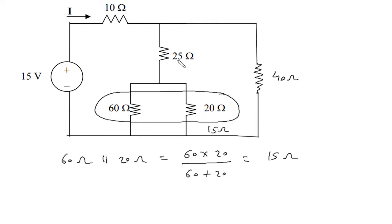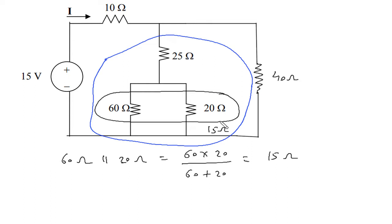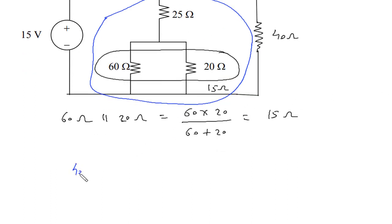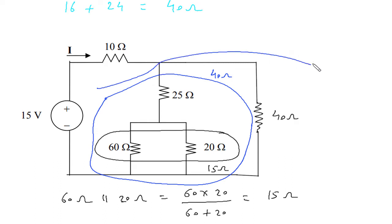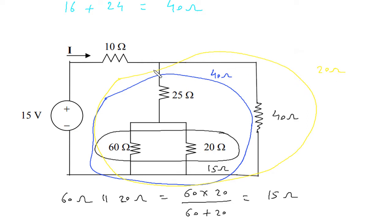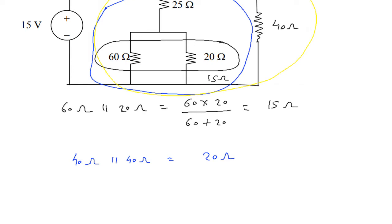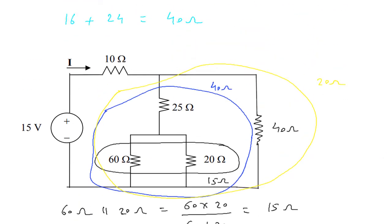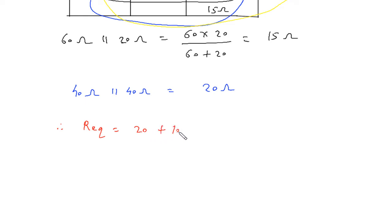15 Ohm in series with 25 Ohm gives 40 Ohm. Now this 40 Ohm parallel with 40 Ohm gives 20 Ohm. Then 20 Ohm series with 20 Ohm series with 20 Ohm — so Req is equal to 20 plus 10, which is 30 Ohm.